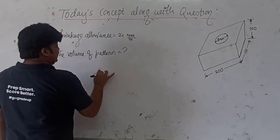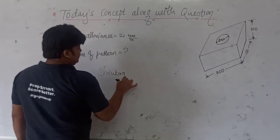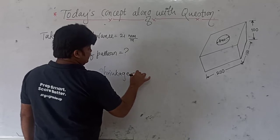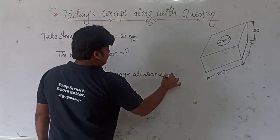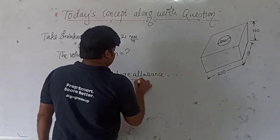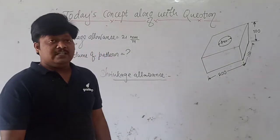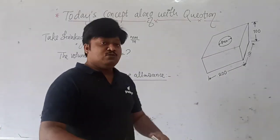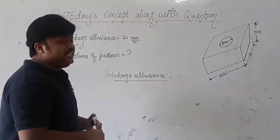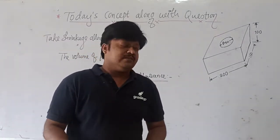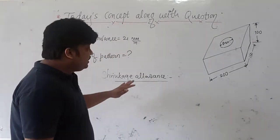When you talk about shrinkage allowance, please remember that most metals are going to shrink during cooling. To compensate for the shrinkage, we actually provide some extra dimension on the pattern — and that is nothing but the shrinkage allowance.